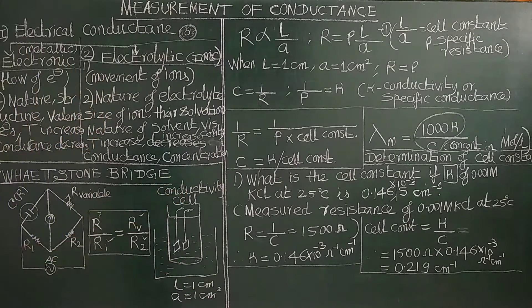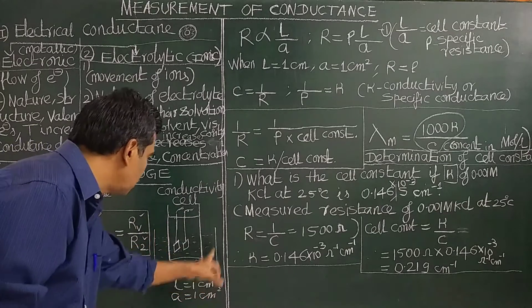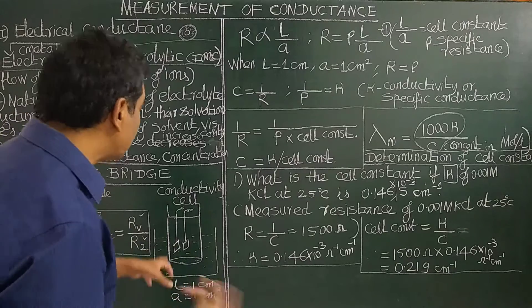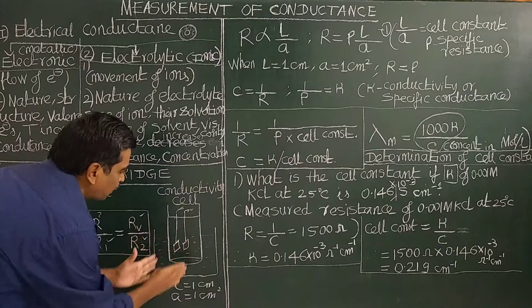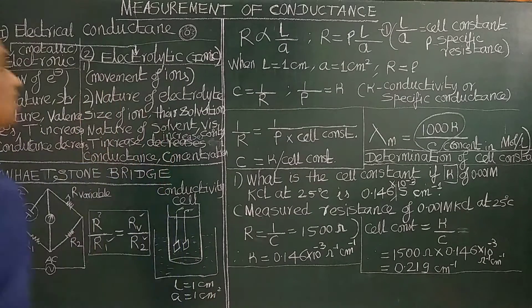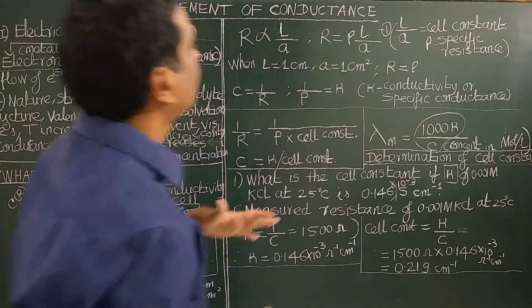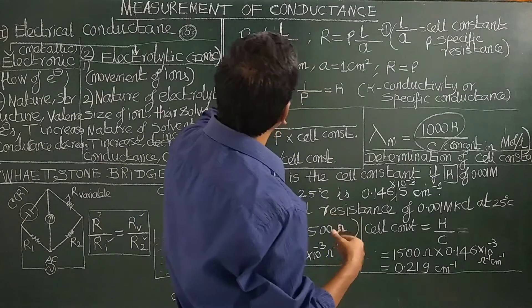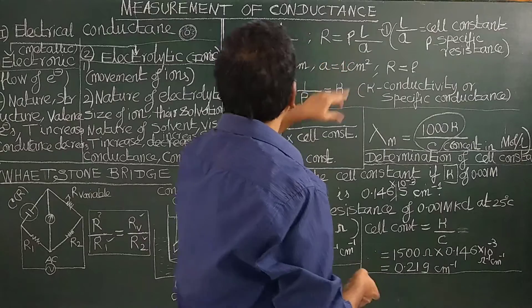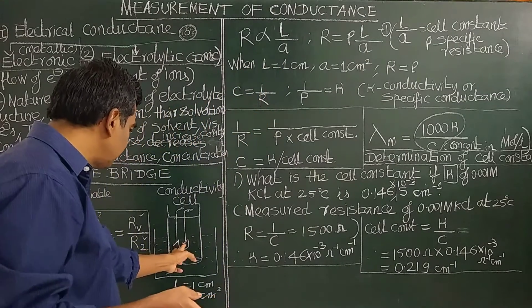What is a conductivity cell? It consists of a conductivity bridge and a conductivity cell containing the electrolytic solution — for example, 0.001 molar KCl solution — for which the conductance is to be measured. There are two platinum electrodes; the length of the platinum electrode is 1 cm and the area of cross-section is 1 cm². The conductance between the electrodes is measured.